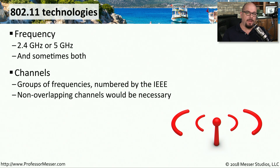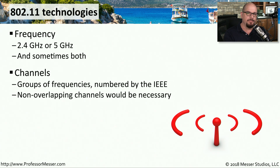In your configuration of 802.11 wireless access points, you're able to choose a channel of frequencies to use. This is a grouping of frequencies the IEEE has put together and assigned numbers to. For example, a 20 megahertz block of frequencies in the 2.4 gigahertz range centered around 2,412 megahertz is called channel 1. Some of these channels overlap with each other, so channel 1 and channel 2 slightly overlap. We often prefer to use channel 1, channel 6, or channel 11 because those 20 megahertz bandwidths will not overlap with each other.